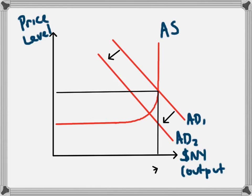Originally the economy produced output at NY1, and the price level was at P1. As a result of the decrease in aggregate demand, we get a decrease in national income from NY1 to NY2.